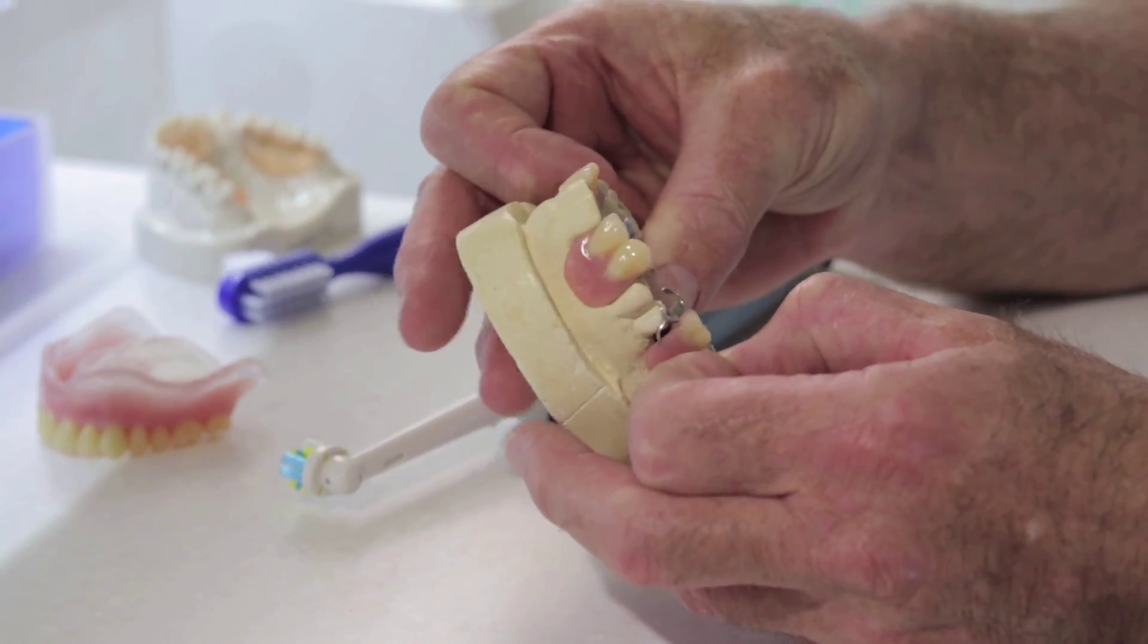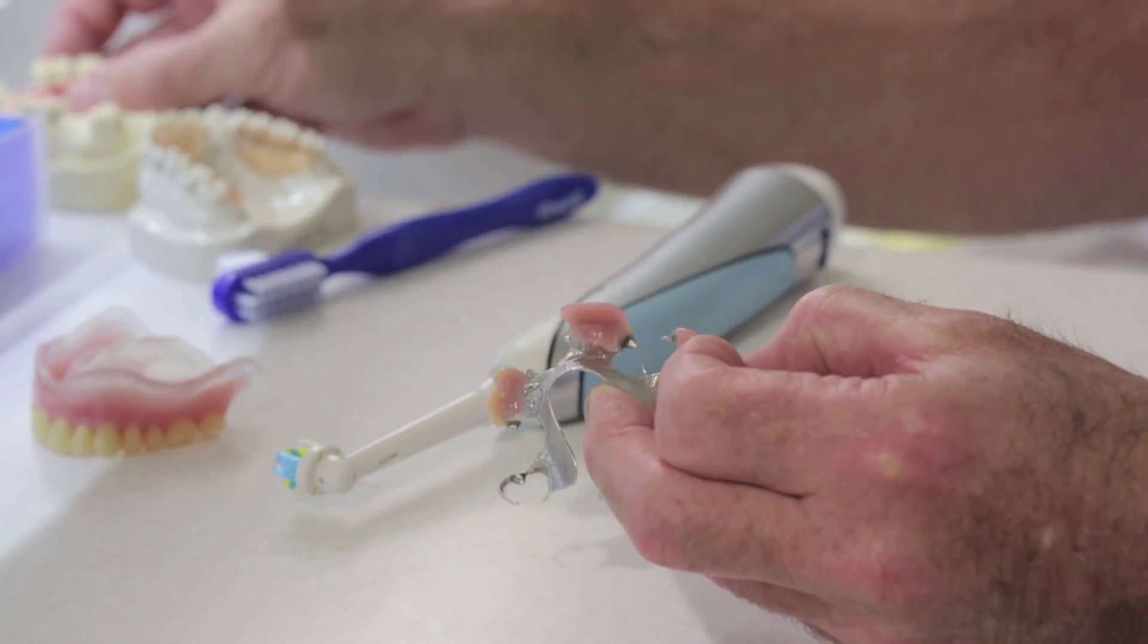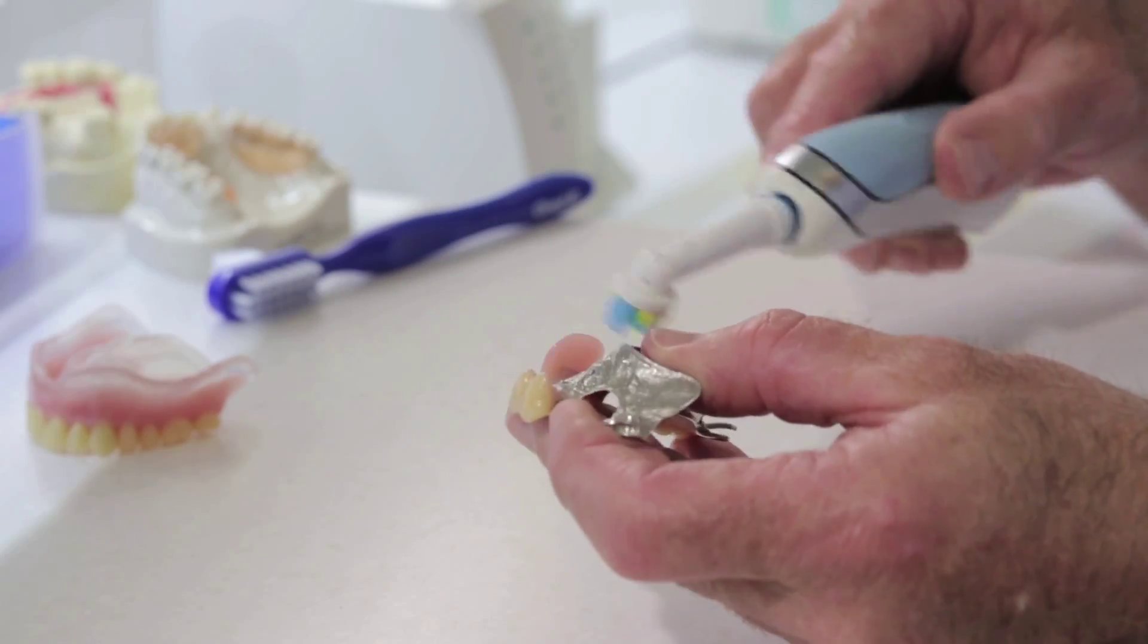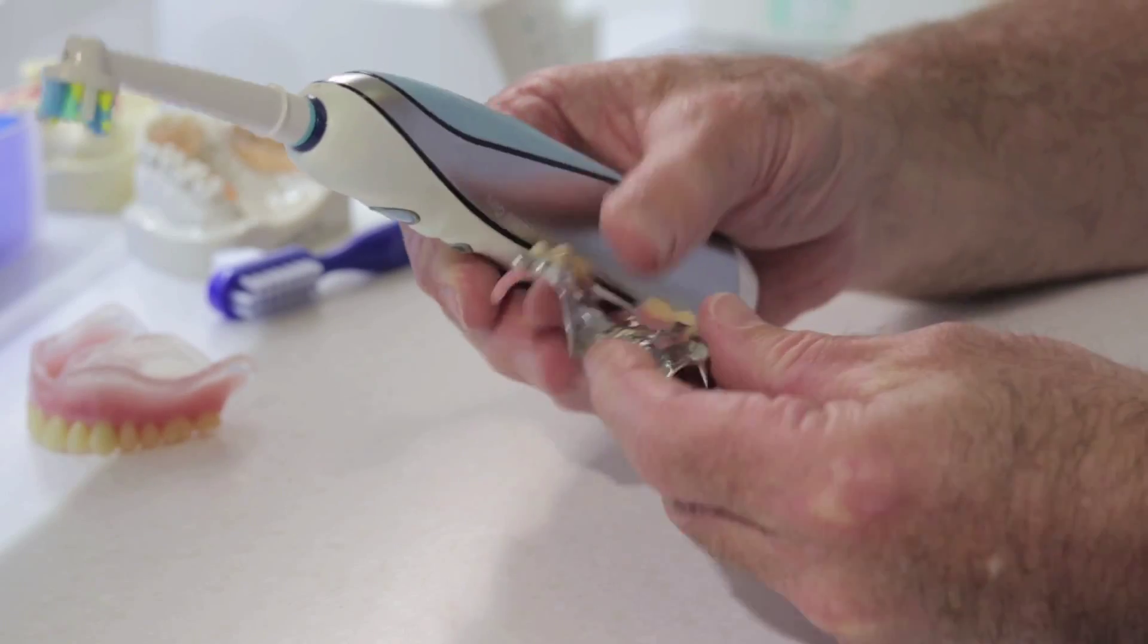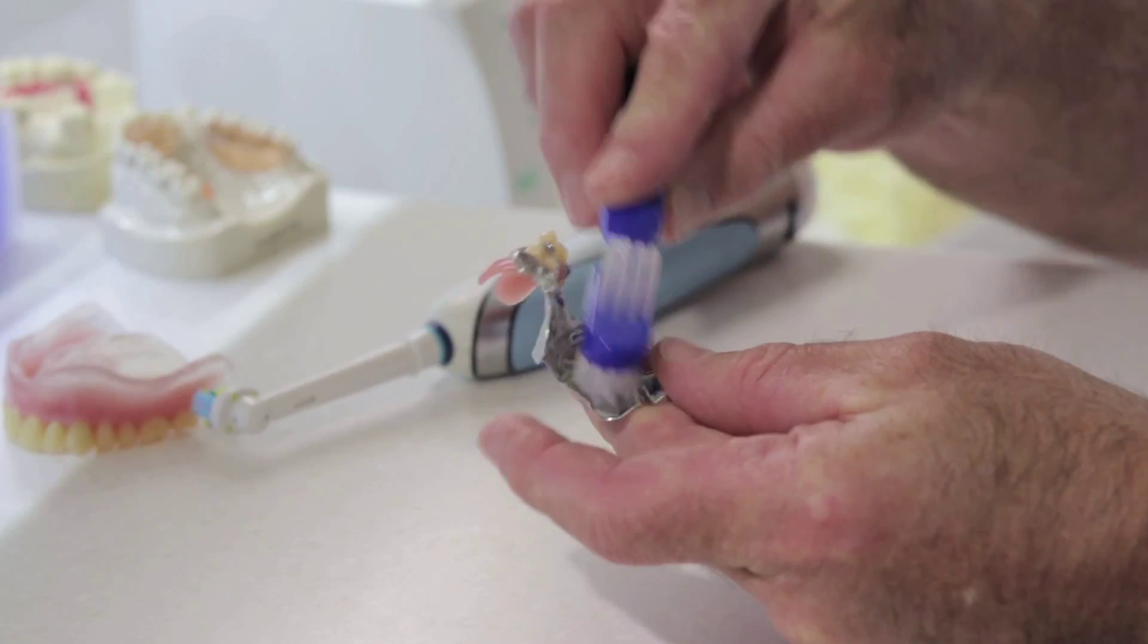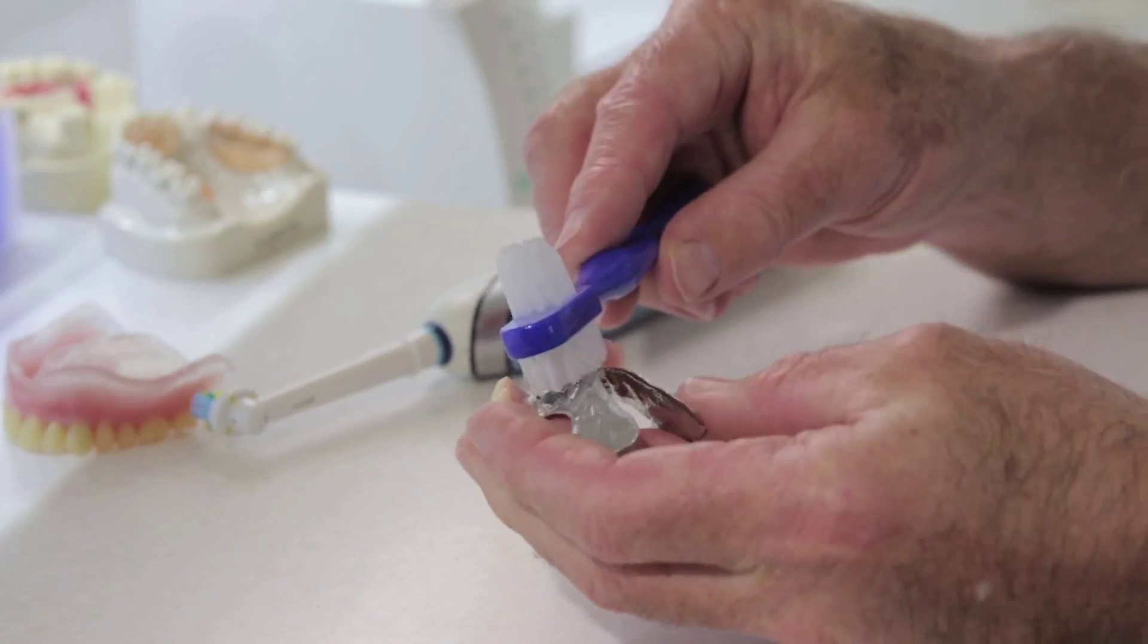These type of dentures, the ones made with metal, similar technique but they're sometimes a little more complicated, more clips, more attachments, and they might be better with an electric brush. If you want to do the bulk of it with the electric brush as well.